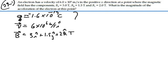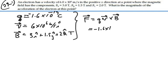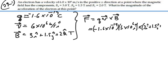We know that the force is equal to the charge times the cross product between the velocity and the magnetic field. So this would be negative 1.6 times 10 to the minus 19 coulombs, times the velocity 6 times 10 to the 6 î, crossed with 3î plus 1.5ĵ plus 2k̂.